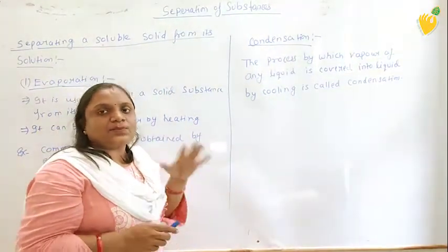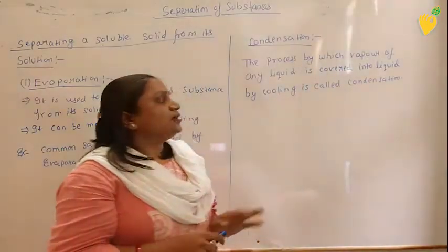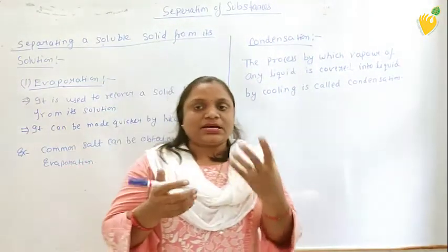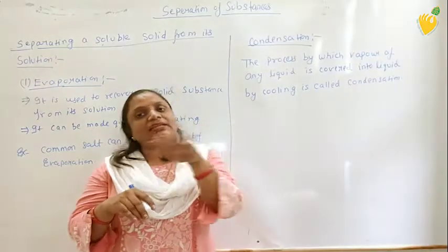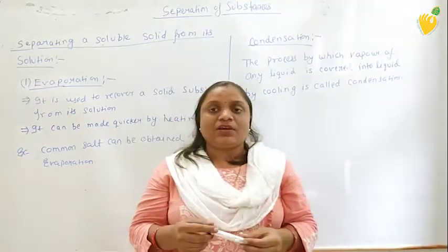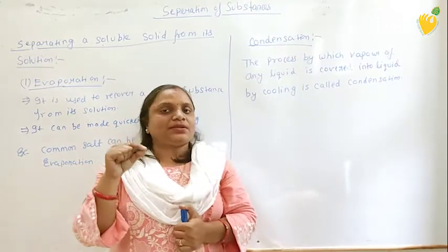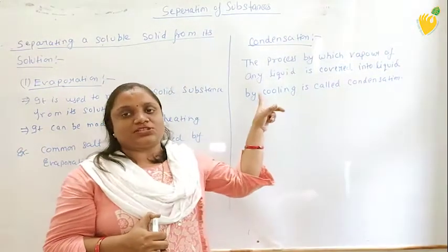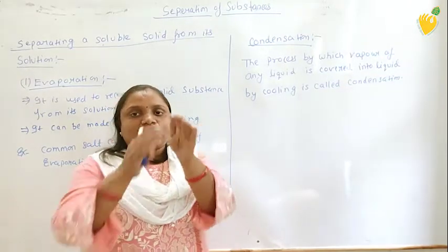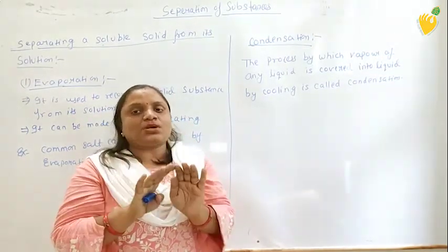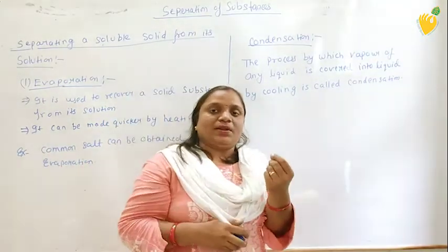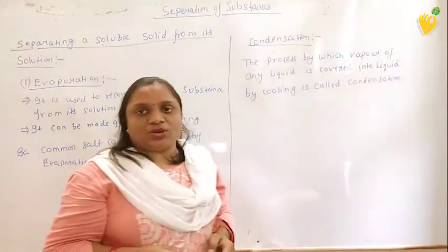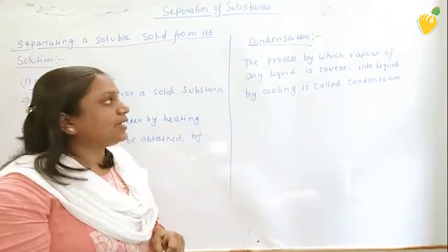The next process is condensation. Condensation is the process of conversion of vapour into liquid. Just do an experiment at home: take a glass filled with boiled water and cover it with a plate. After some time, you will notice tiny droplets on the cover. These droplets are formed by the process of condensation — the water vapour rising from the vessel collects on the cover and is converted into tiny droplets. The process by which vapour is converted into liquid is called condensation.